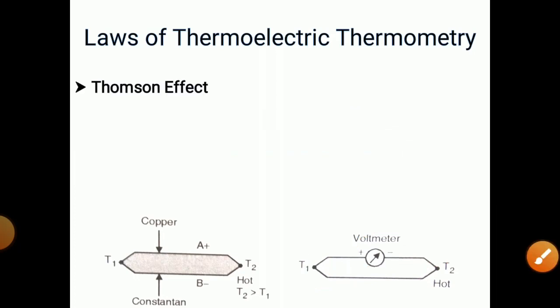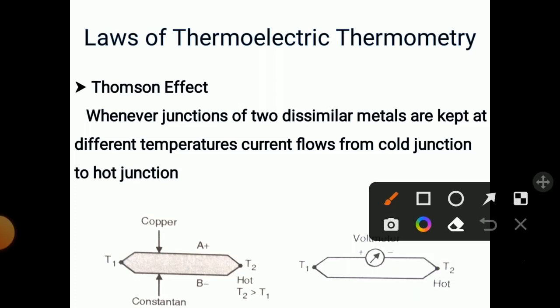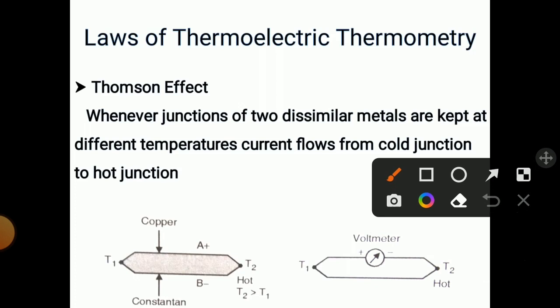Now the Thompson effect: whenever junctions of two dissimilar metals are kept at different temperatures, current flows from the cold junction to the hot junction. When these two junctions are kept at different temperatures, current flows in the circuit from cold to hot junction — this is the Thompson effect.